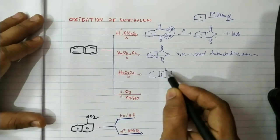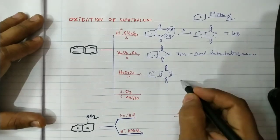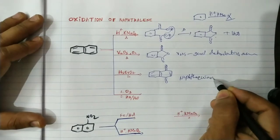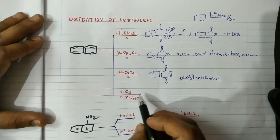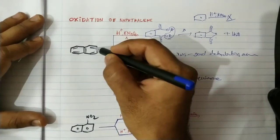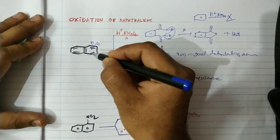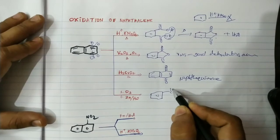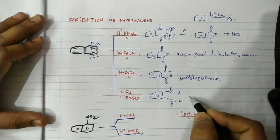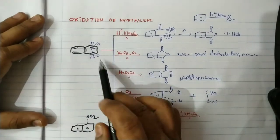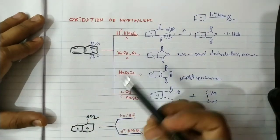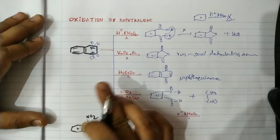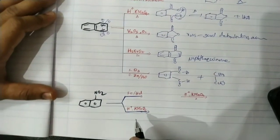Oxidation with chromic acid gives naphthoquinone as a very interesting product. In ozonolysis followed by reaction with zinc and water, the double bonds are cleaved: this gives glyoxal and phthalaldehyde as the two products from ozonolysis of naphthoquinone.